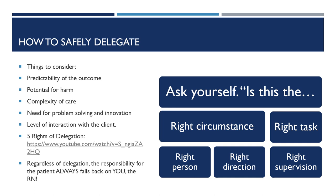Problem solving and innovation: if the task is complicated, the nurse needs to be there. Critical thinking and problem solving are intentionally taught in nursing school, but not in nursing assistant school. What's the level of interaction? Making sure the nurse is available for any psychological or psychosocial support or even education — we know we cannot delegate education. Based on these considerations, ask yourself: Is this the right circumstance? Is it the right task? Is it the right person? Did I give enough information for the right direction? And do I have the right supervision?